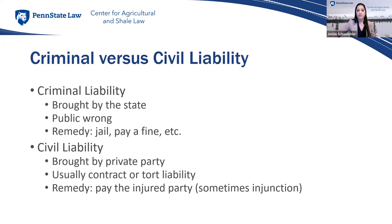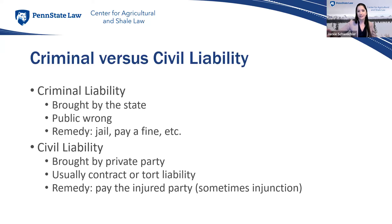Civil liability refers to lawsuits brought by a private party. Civil lawsuits often arise from contracts — if two people have a signed agreement and one party fails to complete it, that party will be liable, usually for money. In an agritourism operation, this could arise from disagreements with customers or outside vendors. For example, if you contract with a food truck operator and then switch vendors, you might owe that operator compensation depending on your contract.